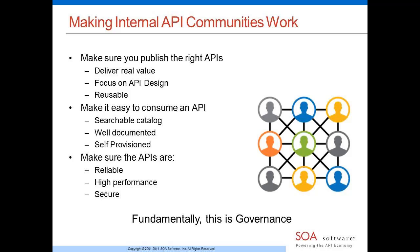Third, make sure APIs are behaving correctly — reliable, performing properly, and secure. That means the API endpoint is available, performs as expected, you're not leaking data, and you're complying with regulatory concerns. Fundamentally, these three steps make an internal API community work — and fundamentally, that's governance. Whether you call it governance or control, it's very important to have some lightweight, agile governance in place.